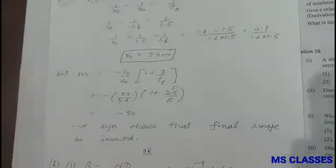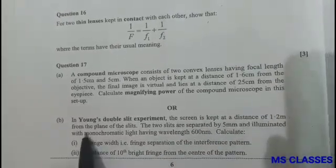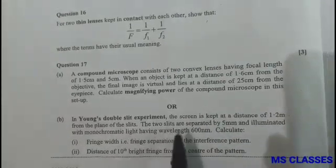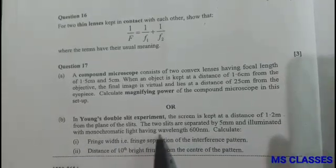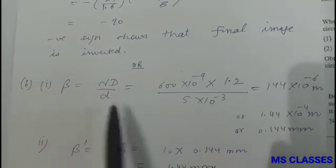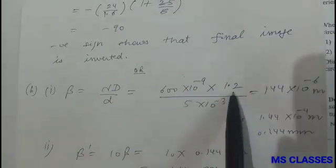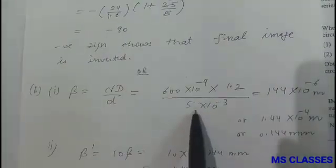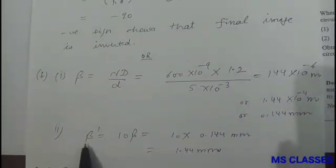Or in Young's double slit experiment, the screen is kept at a distance of 1.2 meter from the plane of the slits. The two slits are separated by 5 millimeter and illuminated with monochromatic light having wavelength 600 nanometer. Calculate the fringe width and the distance of 10th bright fringe. As we know that beta is lambda capital D by small d, where lambda is in nanometer so we have to convert this. Capital D is 1.2 meter and small d is 5 millimeter. So if we solve we get 0.144 millimeter.